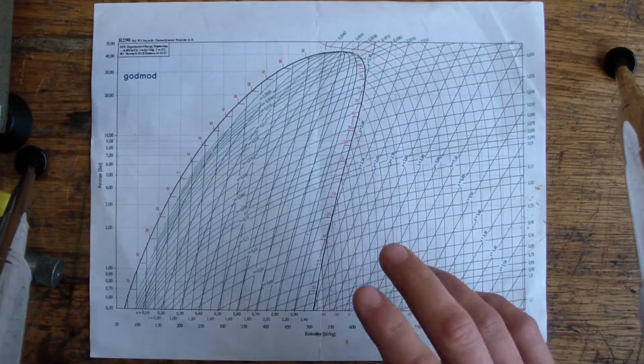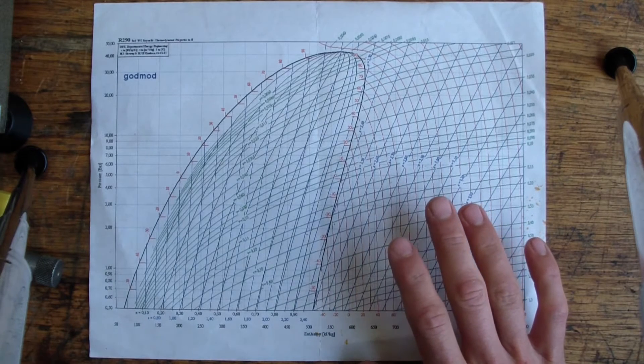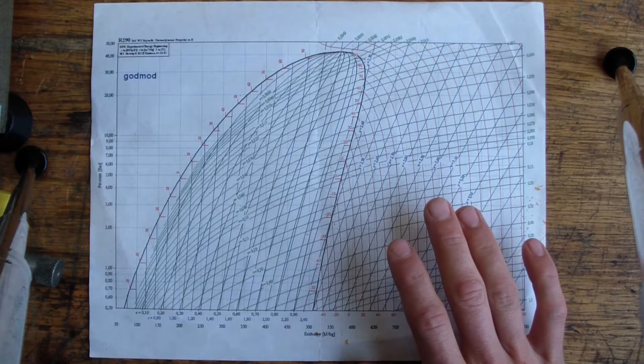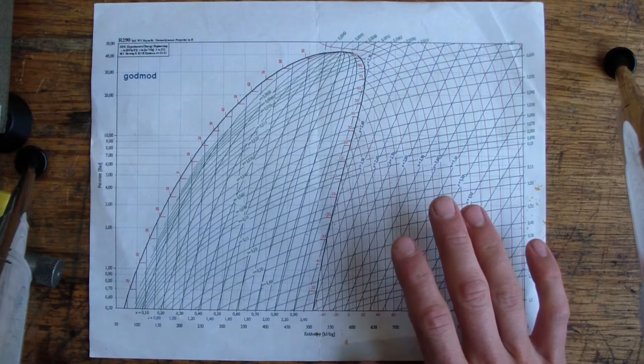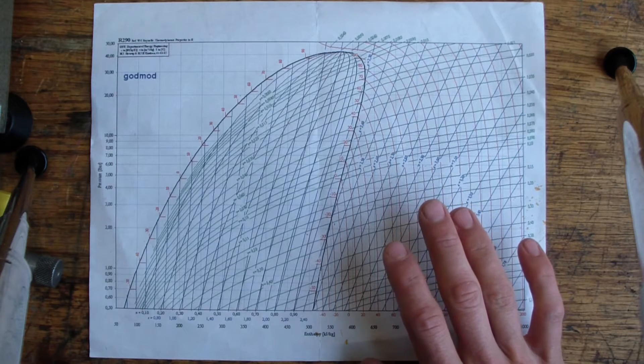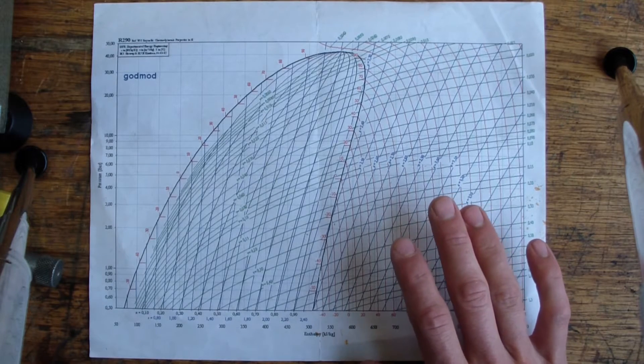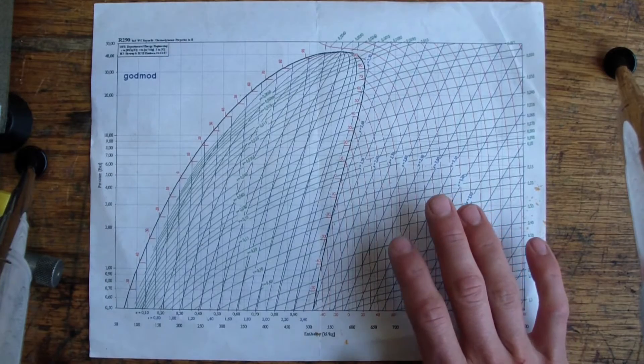Another option you might have is an automatic expansion valve. That's just a pressure regulator. The issue with a pressure regulator is it has a simple setting that you might be able to adjust to some certain extent, but it's not really going to cover the wide range of conditions that your system might be in. Now, if the characteristics of your system or the environment of your system don't change much, well then an automatic expansion valve might just work just fine.